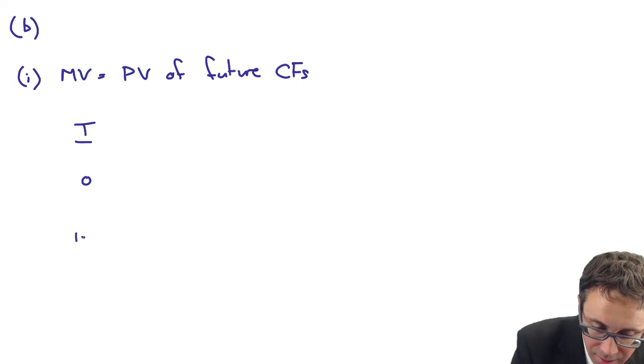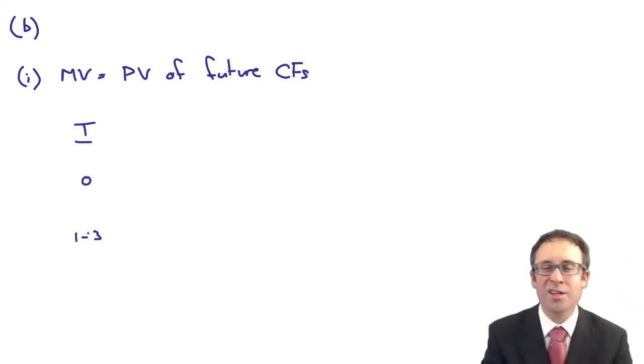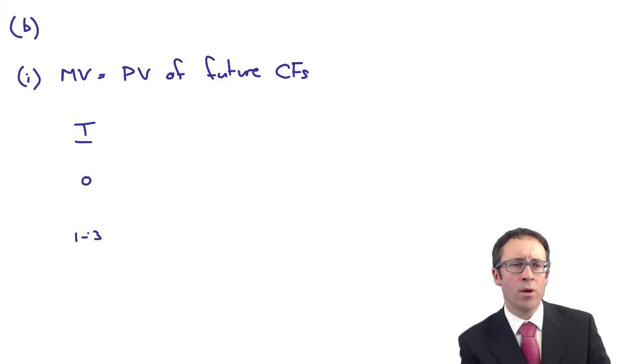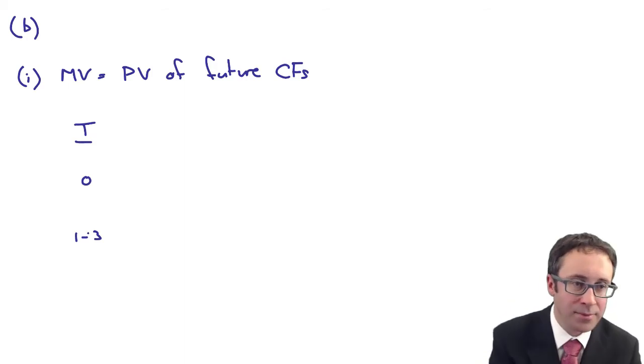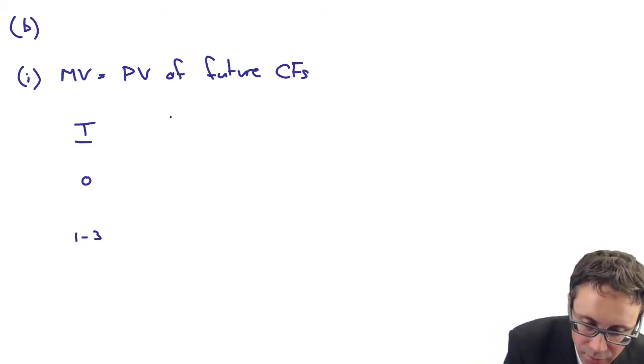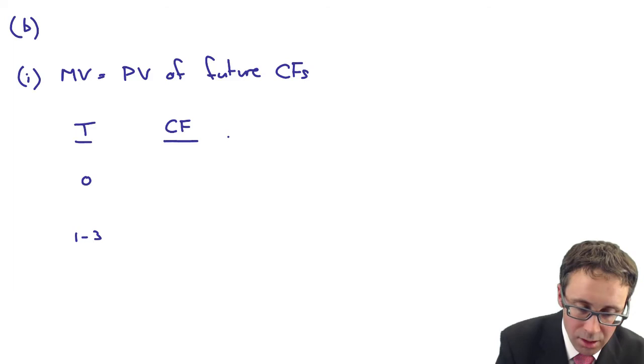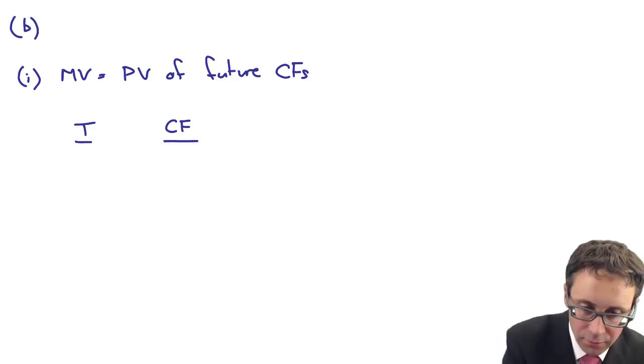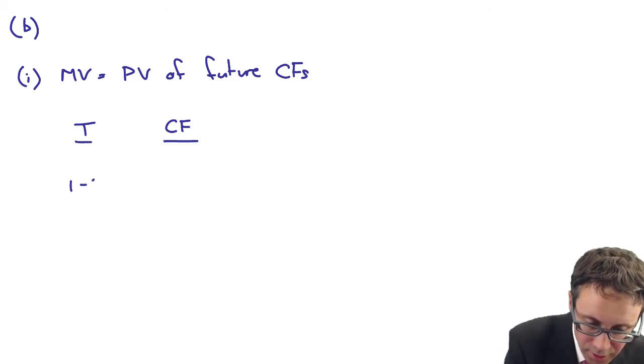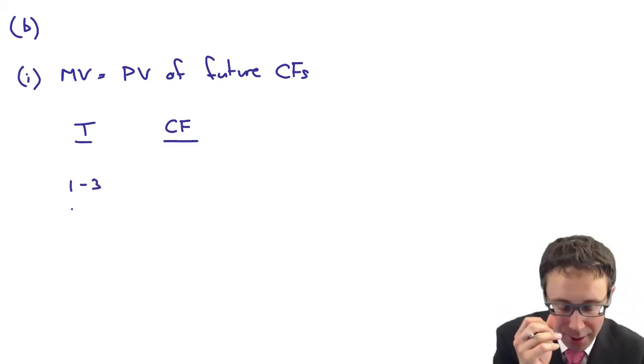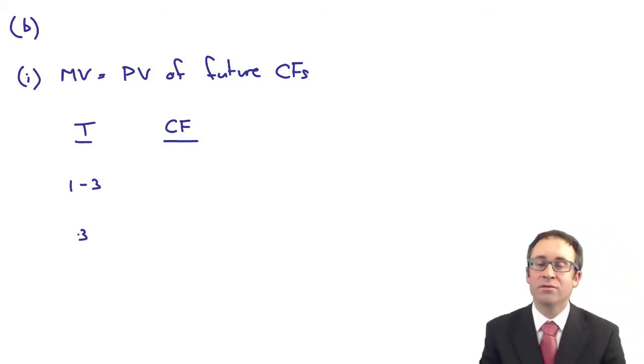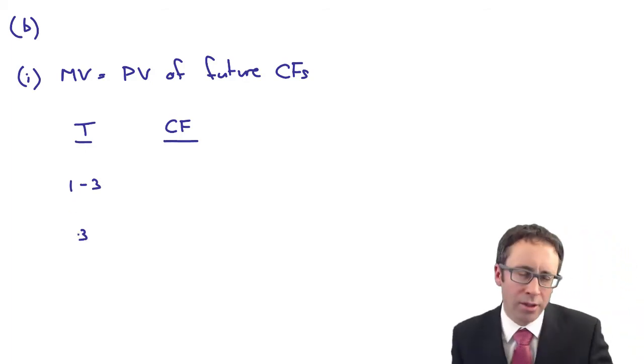Don't worry about part two just yet. Let's just look at part one. So the market value is the present value of the future cash flows. So we need to look at the time period. So today, and then for the next three years. So at the end of 16, so we will get the coupon interest in 17, 18 and 19. Three years time. So we need to look at the cash flow. The cash flow that you have there, careful. Time period T1 to 3. We're trying to work out the market value, aren't we? And then you've got the redemption value in three years.